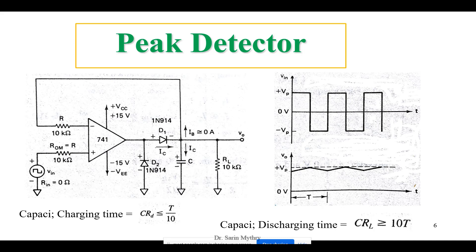Let us see the peak detector. A peak detector is a circuit that detects the highest value of your input voltage — the maximum peak value. That is called a peak detector.